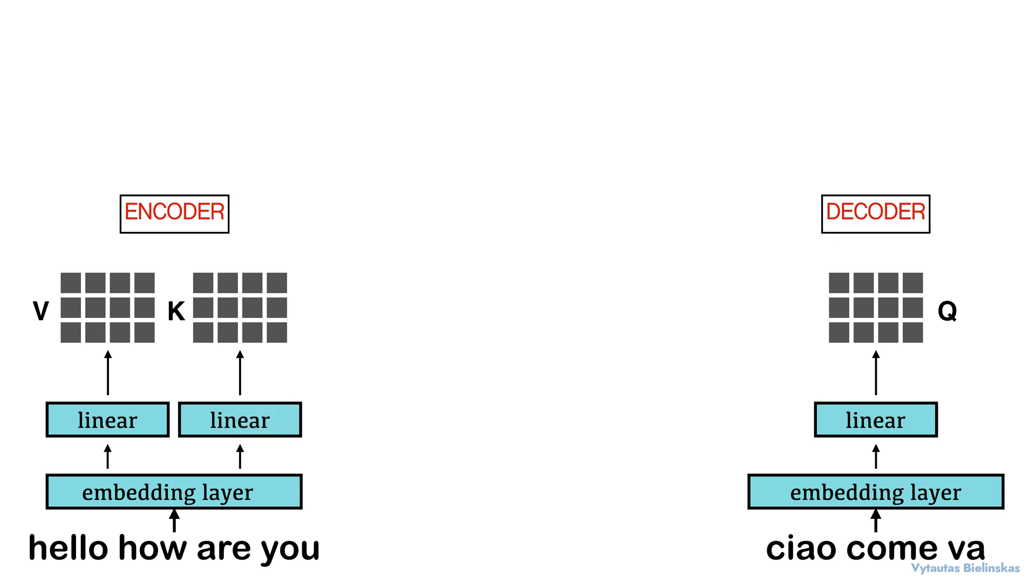So the output of the embedding layer here is exactly the same for the inputs that go into the values and keys here. And here are the linear layers which differentiate them.